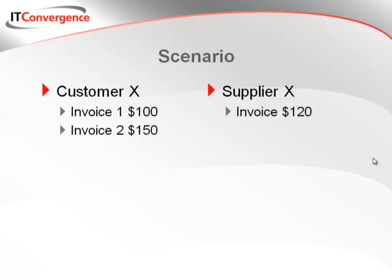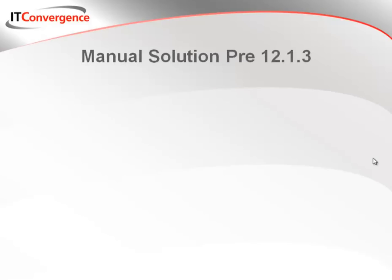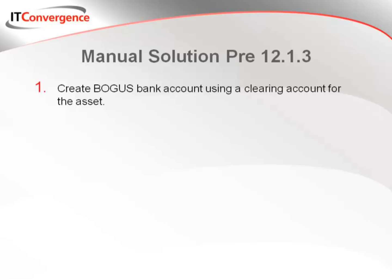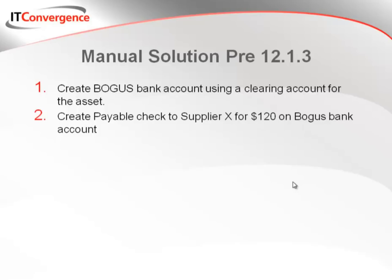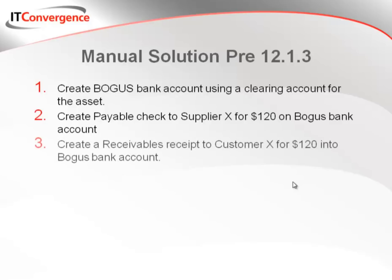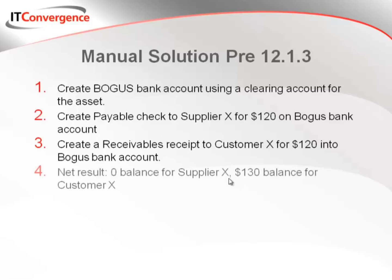The scenario: I have customer X who owes us $100 for invoice 1 and $150 for invoice 2. I have supplier X, which happens to be the same trading partner, that I owe them for an invoice for $120. Prior to release 12.1.3, there was a manual solution. First, I would create a bogus bank account using a clearing account for the asset. Second, I would create a payable check to supplier X for $120 drawn on the bogus bank account. Third, I would create a receivables receipt to customer X for $120 into the bogus bank account. The net result is that I would owe supplier X no money and there would be a $130 balance for customer X to pay me.